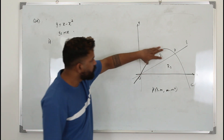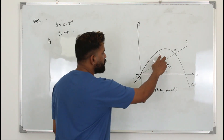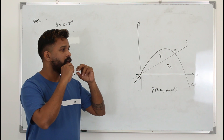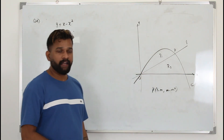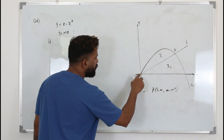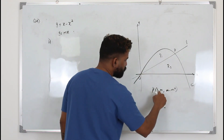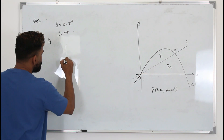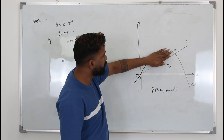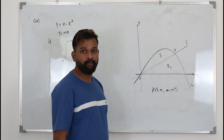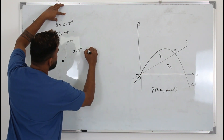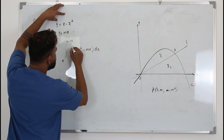In part b, we need to find the area R1, which is bounded by the curve and the straight line. From the chapter on integration, area between curves: the x-coordinates of the bounds are 0 and 1 minus m. So the integral is from 0 to 1 minus m of the function on top minus the function at the bottom, which is mx.